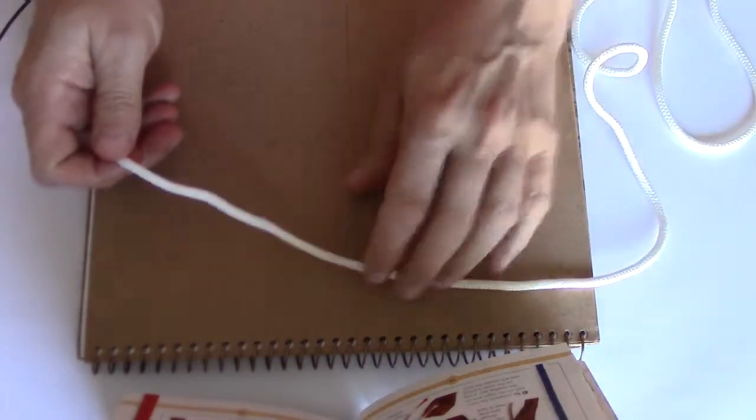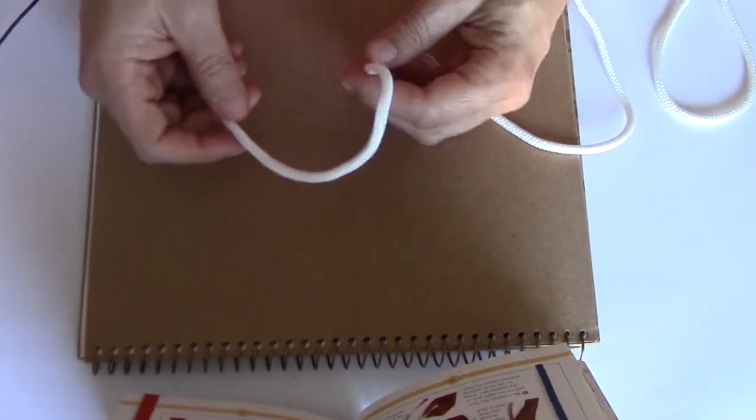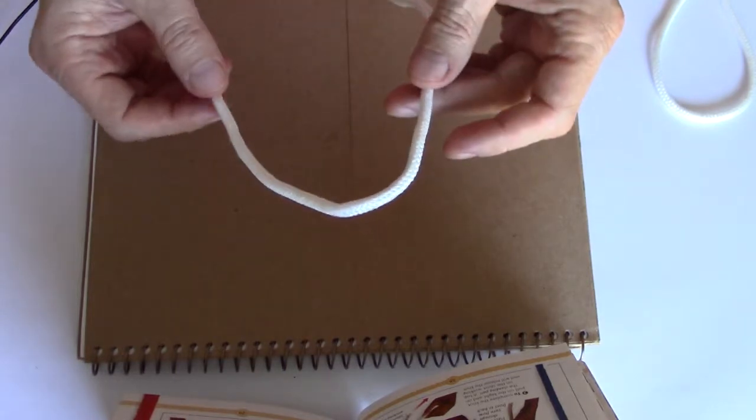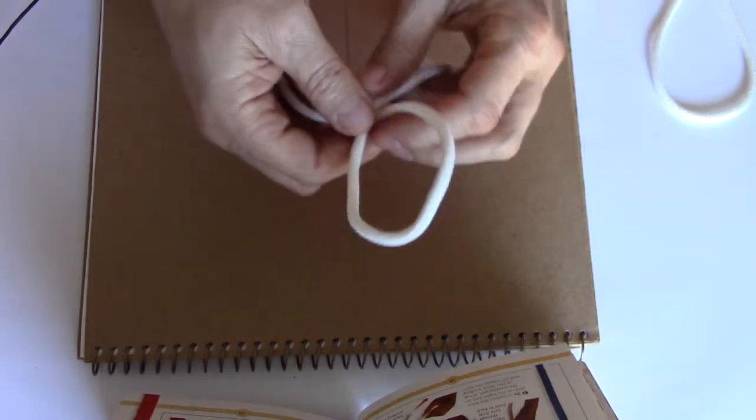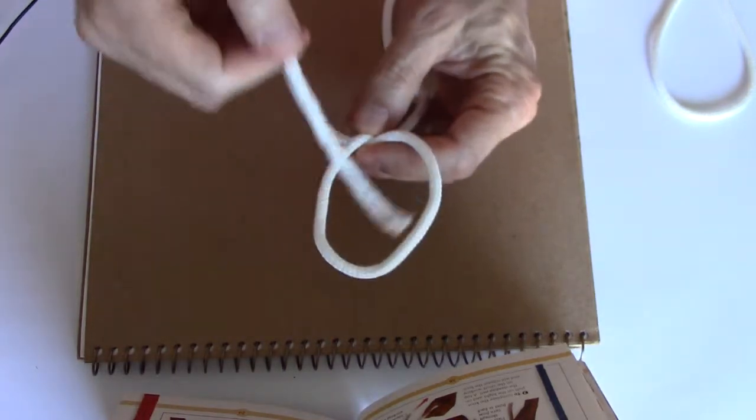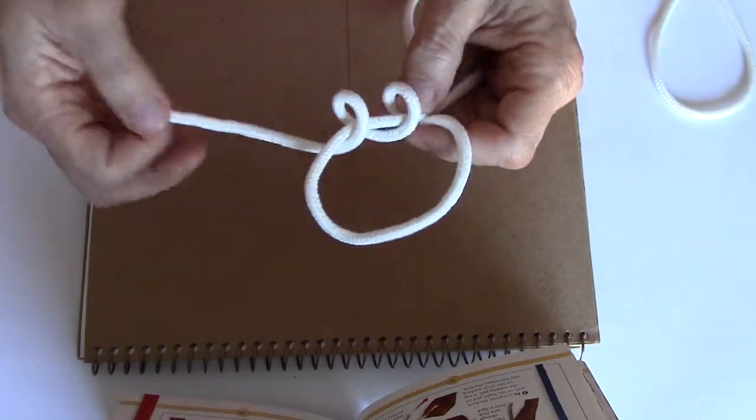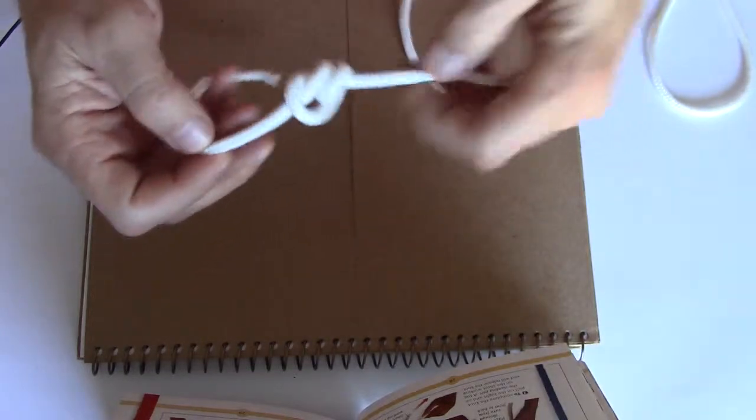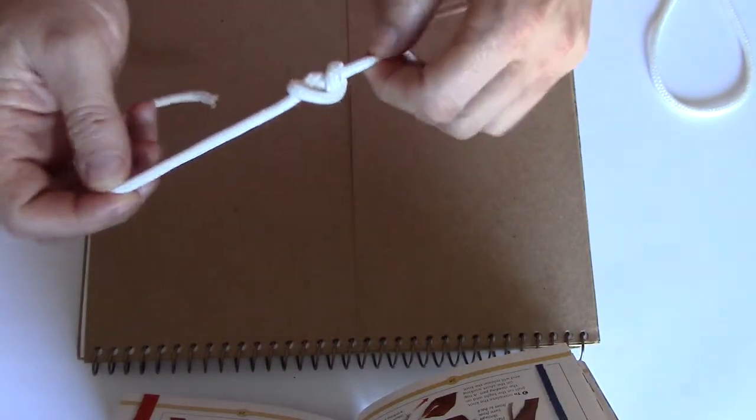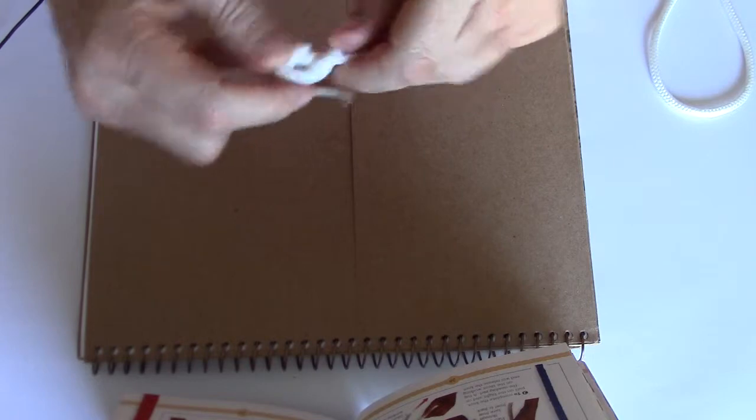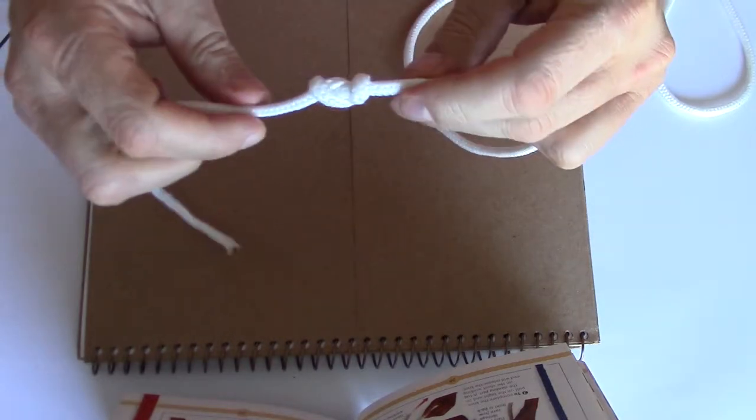The third one is a double overhand knot. And again, it's very simple to do. You build it just like a regular overhand knot. So you've got your rope. You make your initial loop. And you go through two times. One and then two. And then you carefully pull it tight. And that's your double overhand knot.